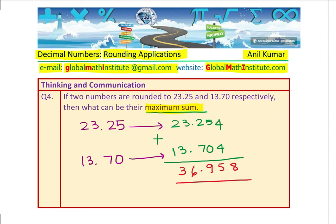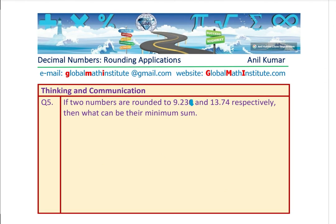Since you are clear about how we find the maximum, you should be in a position to do the next question. We now have two numbers: 9.23 and 13.74. This time we are interested in finding the minimum sum — what is the lowest number which rounds to 9.23 at the 100th place, and another number whose rounding result is 13.74?